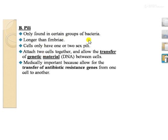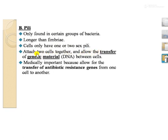Pili are only found in certain groups of bacteria and they are longer than fimbriae. The cells only have one or two sex pili. They attach two cells together and allow the transfer of genetic material between cells.